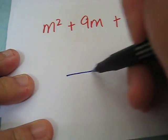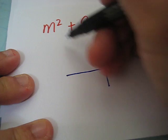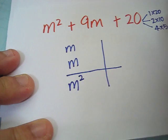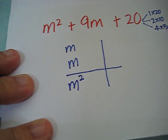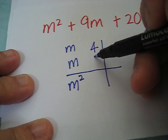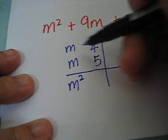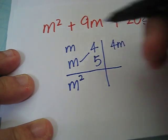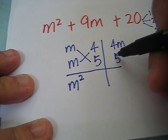Let's try. m squared is same as m times m, which should give us m squared. 20, we can try 4 times 5. m times 4 gives us 4m. m times 5, 5m.